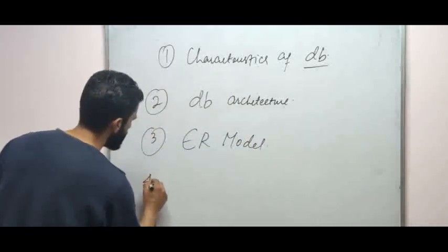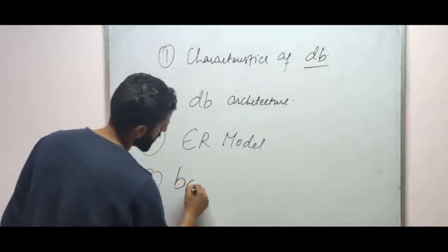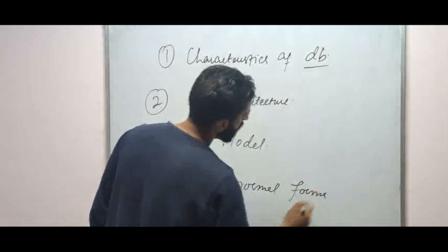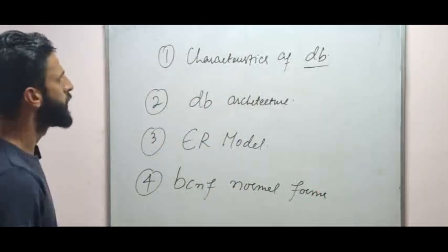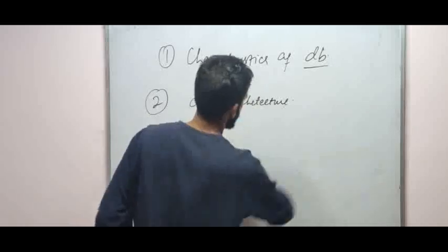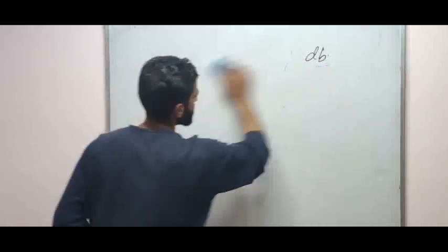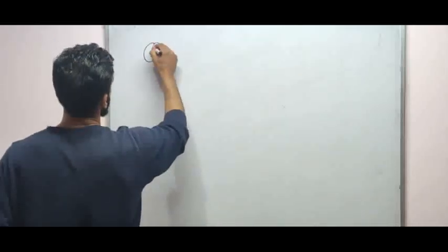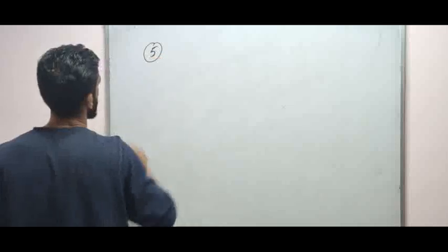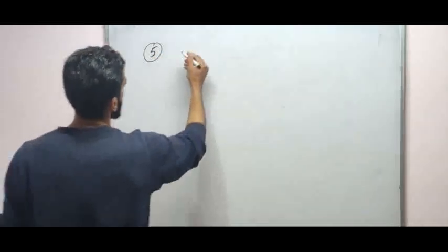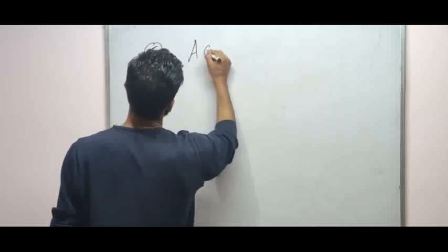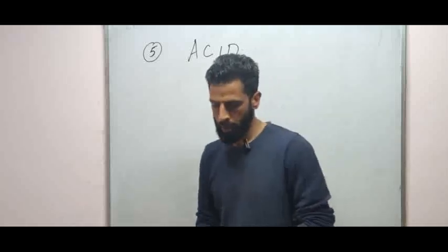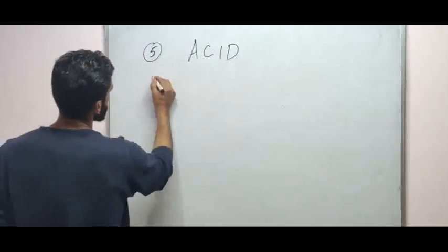The third question is the ER model. The fourth question is BCNF normal forms. These are four important long answer type questions. The fifth question will be ACID properties.